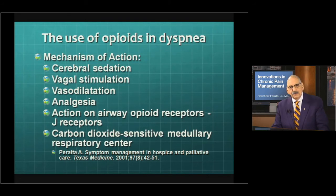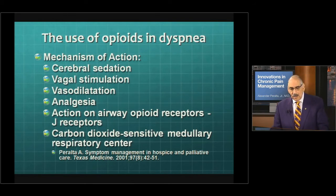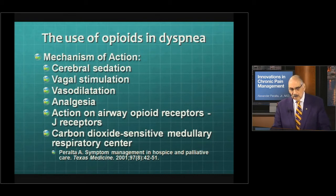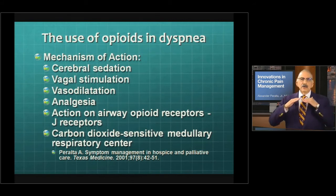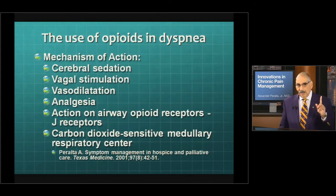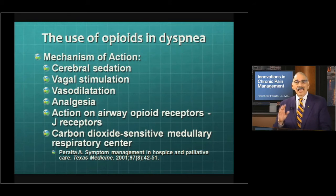The use of opiates sometimes is a big concern — how is it that opiates affect not only pain but also dyspnea? Opiates affect dyspnea by cerebral sedation — they relax the patient. They have a vagal stimulation effect, specifically morphine, that actually vasodilates the vessels. They have an analgesic effect, an effect on the airways through the J receptors, and a very sensitive effect on the carbon dioxide receptors in the medulla. What they really do is decrease input into these carbon dioxide receptors, attenuating those receptors so that a person can tolerate hypercapnia — higher carbon dioxide — and hypoxemia — lower oxygenation — without setting off the normal ventilatory alarms. So they're breathing 20 times a minute rather than 80 times a minute.